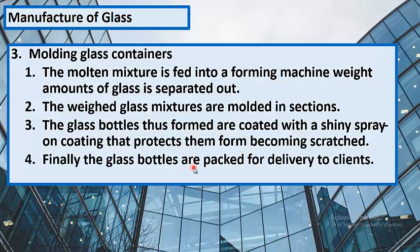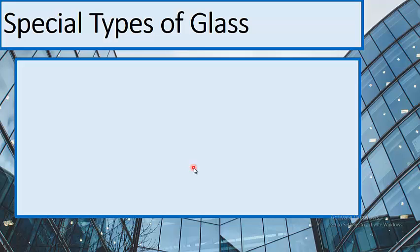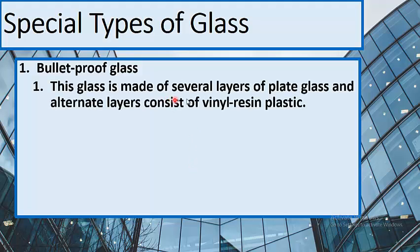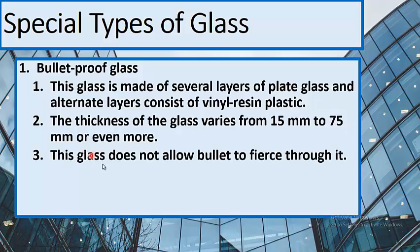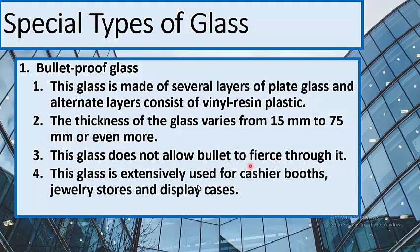Finally, the glass bottles are packed for delivery to clients. There are different types of glass. Bulletproof glass is made of several layers of plate glass with alternate layers of vinyl resin plastic. The thickness varies from 15 mm to 75 mm or even more. This glass does not allow bullets to pierce through it and is extensively used for cashier booths, jewelry stores, and display cases.